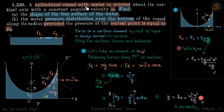We have a cylindrical vessel with water that is rotated with omega. We need to find the shape of the free surface of water and the pressure distribution over the bottom. If you just rotate water in a glass you get a surface like that — we need to find the equation of that surface and the pressure at the bottom.